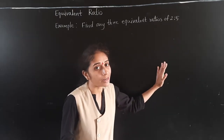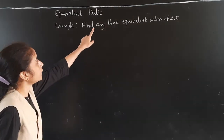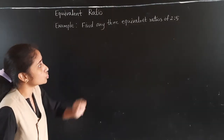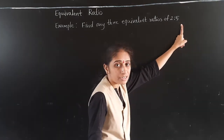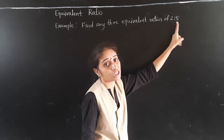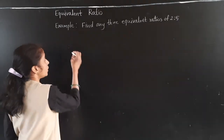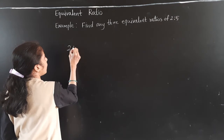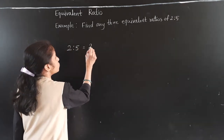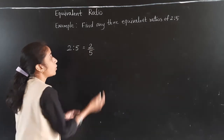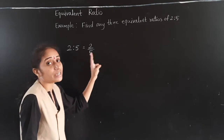Equivalent Ratio. Find any 3 equivalent ratios of 2 is to 5. The ratio 2 is to 5 is given, and we have to find the equivalent ratios. We can write a ratio as a fraction, so 2 is to 5 becomes 2 upon 5.